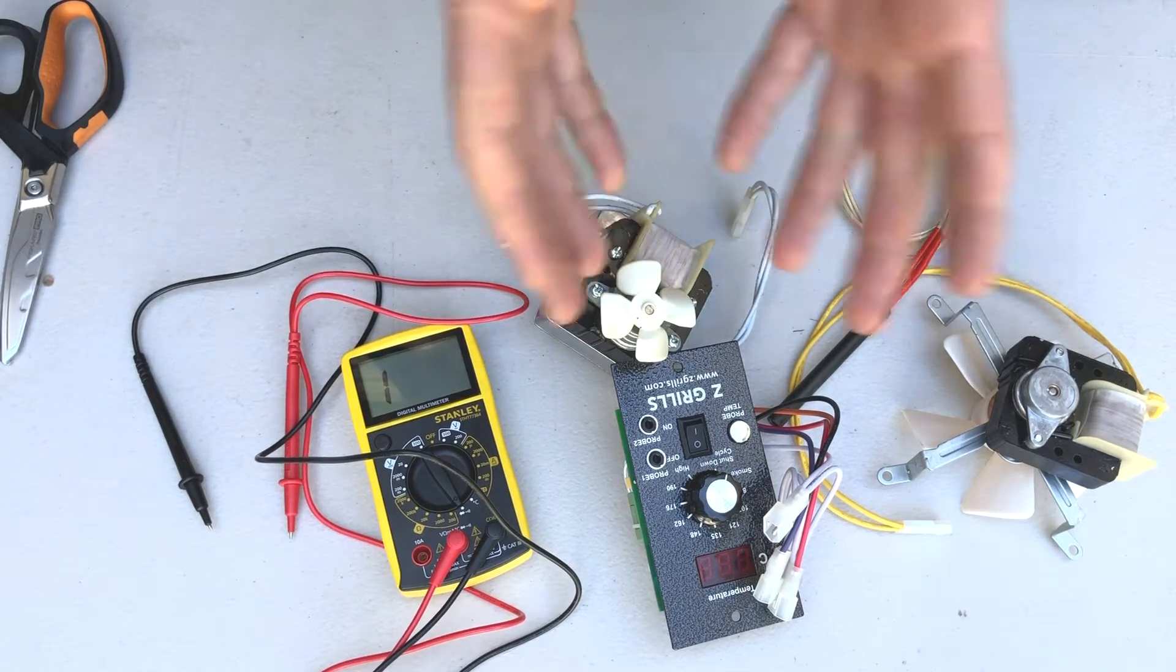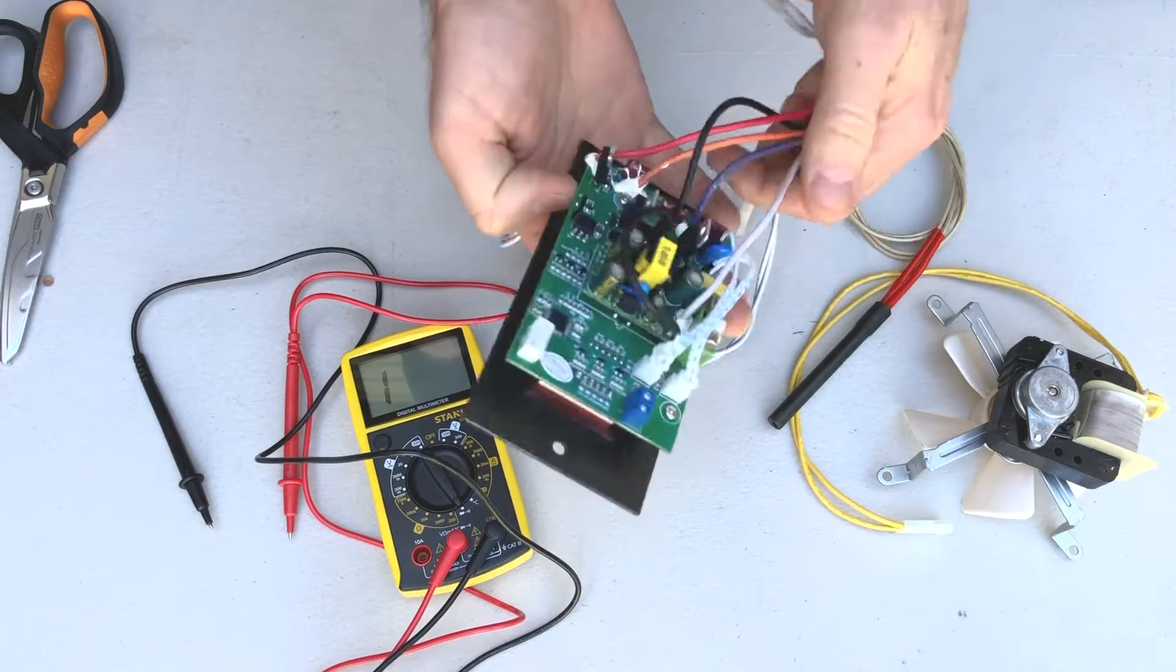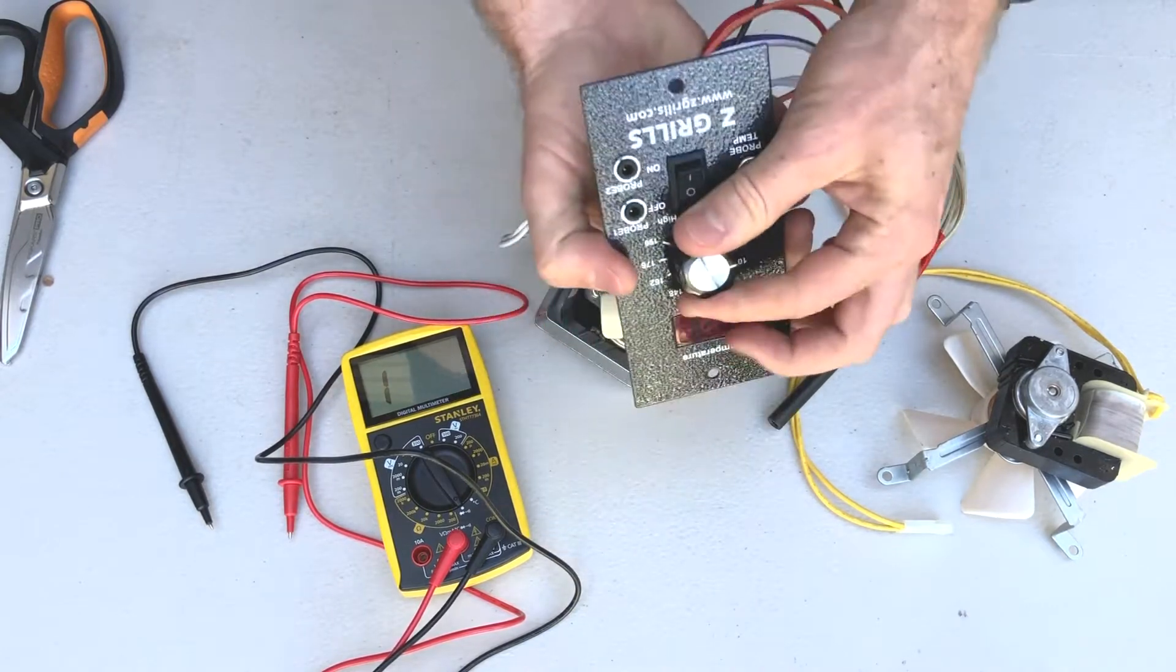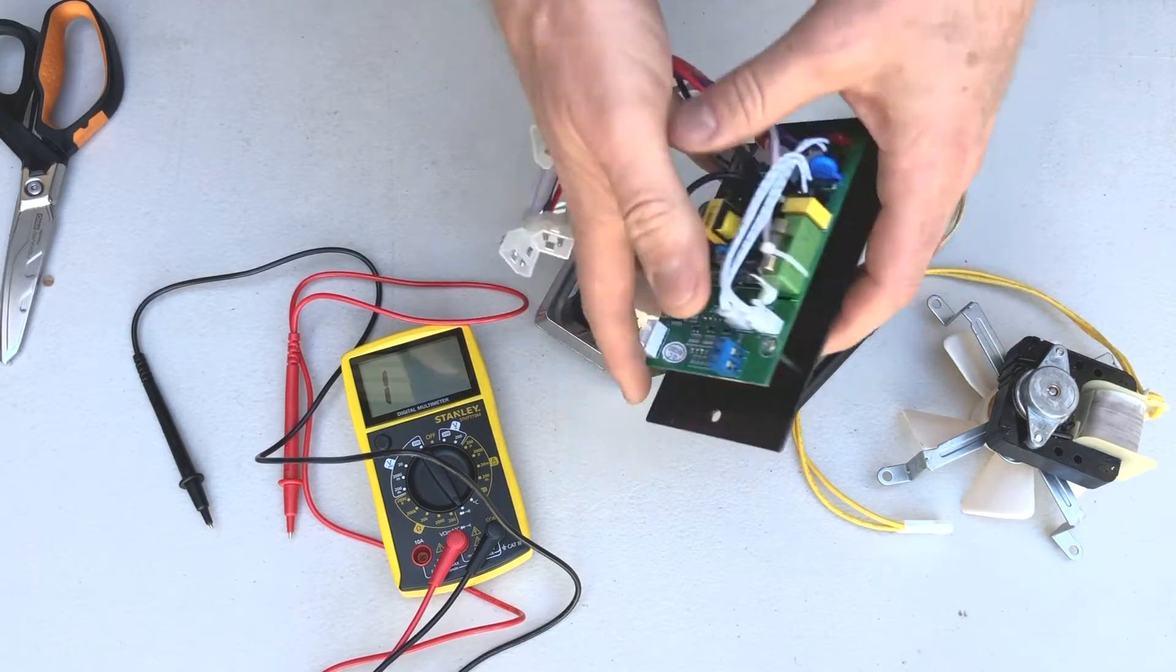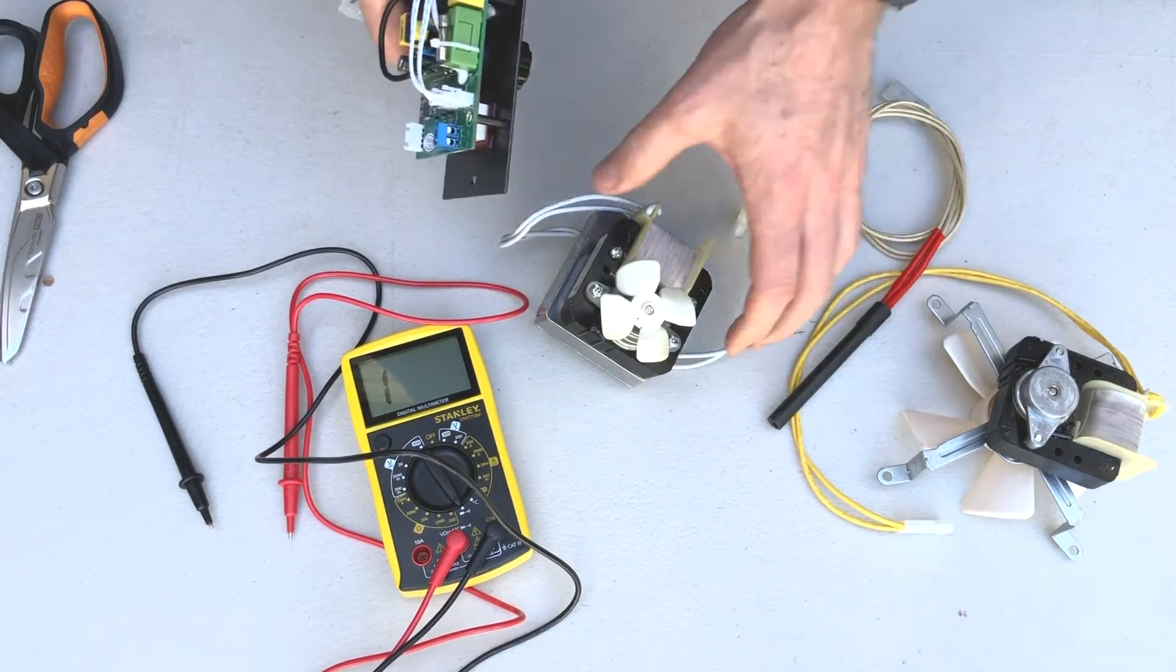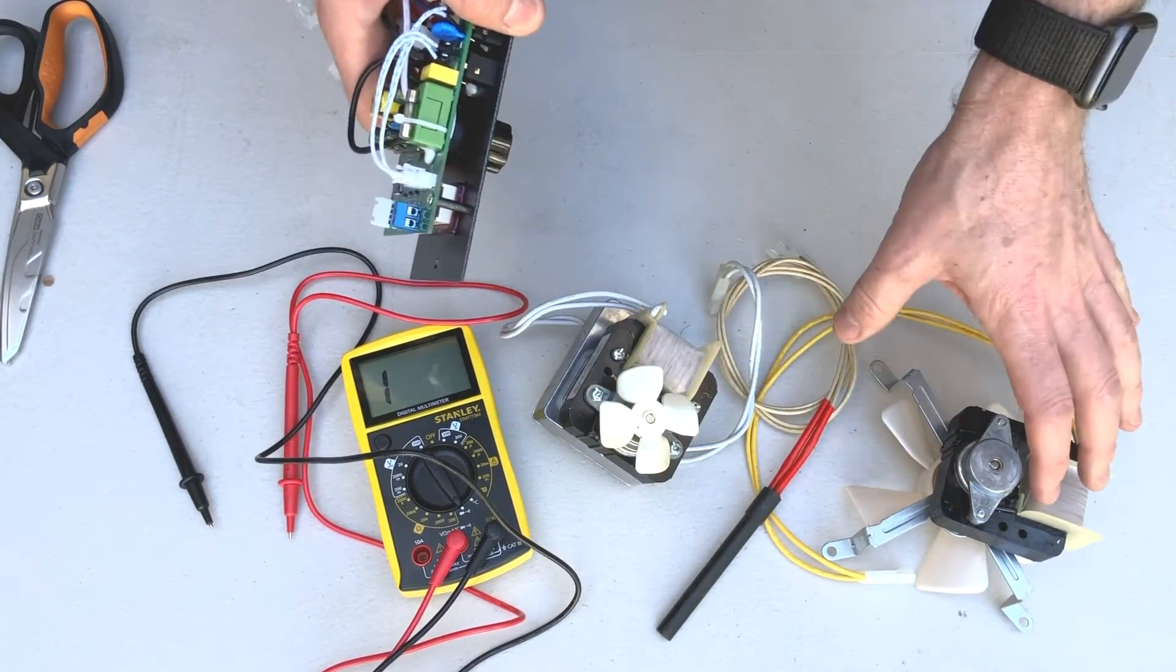G'day, Mick here from Z Grills Australia. If the fuse on your controller blows, which would be indicated by a power trip and the grill does not turn on when you turn the power on and turn it on to the smoke setting, it would be because one of these key components here has actually failed and caused a power short out.